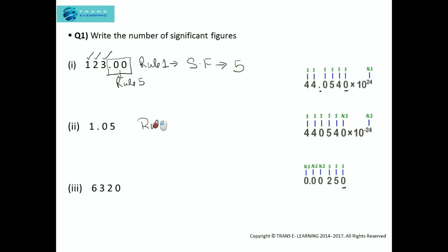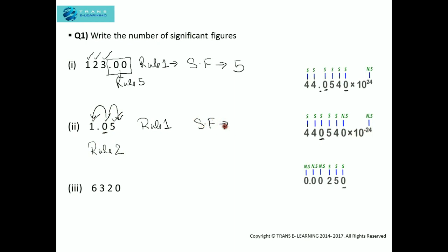Let's see this one. As per Rule 1, non-zero digits are considered significant. As per Rule 2, the zero which is between two non-zero digits is also considered significant. So the number of significant figures will be 1, 2, and 3.